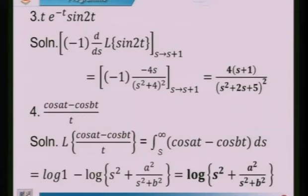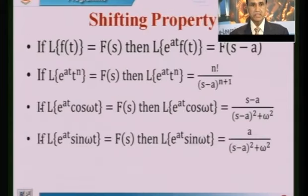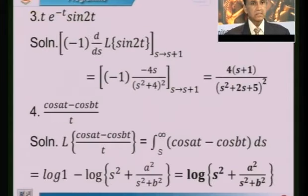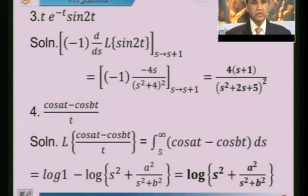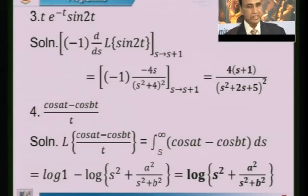The integral property, which you already know, states that the Laplace transform of a function f divided by the algebraic term t is equal to the integral from s to infinity. In the previous step, we had cos(at) minus cos(bt) divided by t under the application of Laplace transform, and we separated those two terms: cos(at)/t and minus cos(bt)/t.